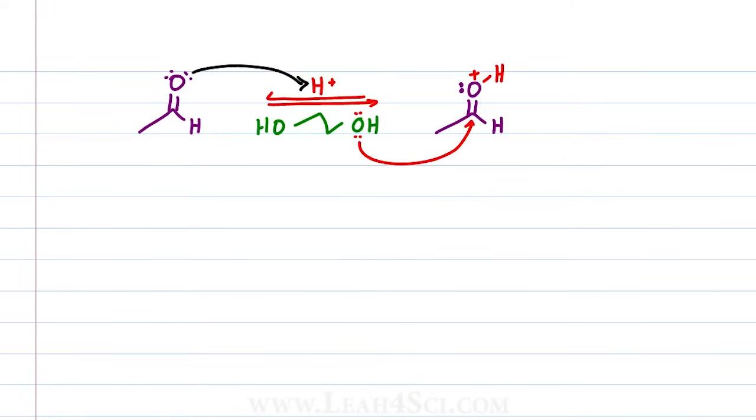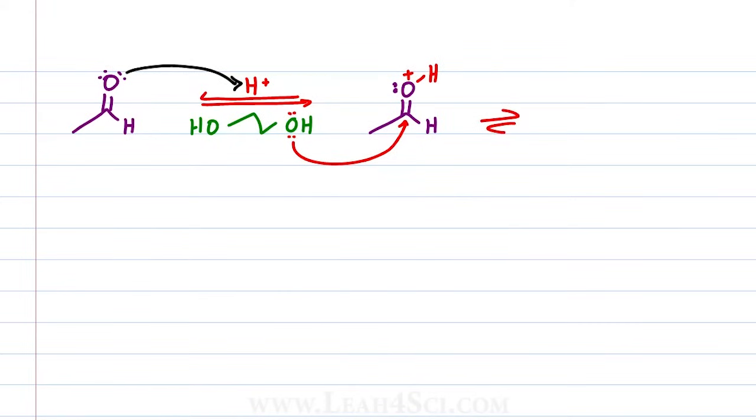In this case, the attack will come from one of the alcohols on the diol, in this case ethylene glycol. When oxygen attacks, carbon would have 5 bonds which can't happen so we collapse the pi bond between carbon and oxygen onto the oxygen giving us an intermediate that now has the purple oxygen with just 1 bond, 1 hydrogen, 2 lone pairs and no charge. And the incoming oxygen now has 3 bonds, 1 lone pair and a positive charge.